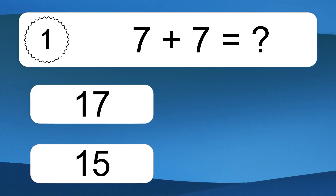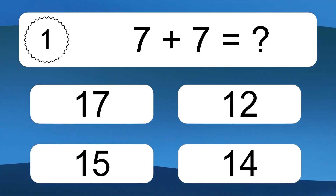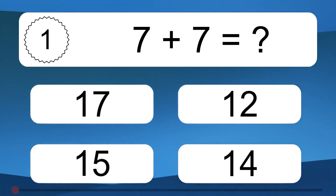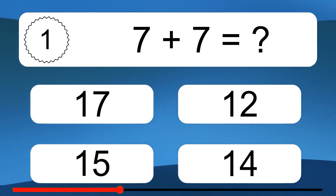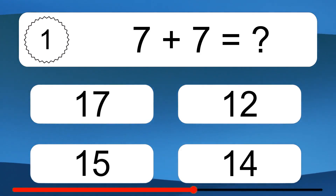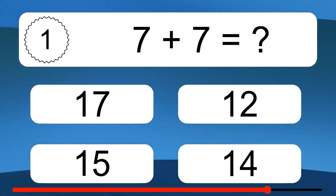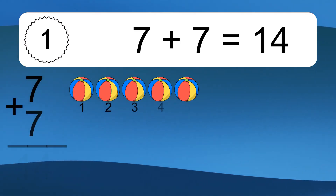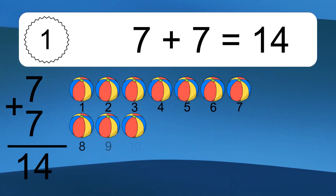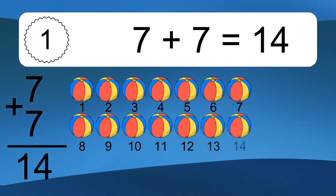7 plus 7 equals what? 7 plus 7 equals 14.